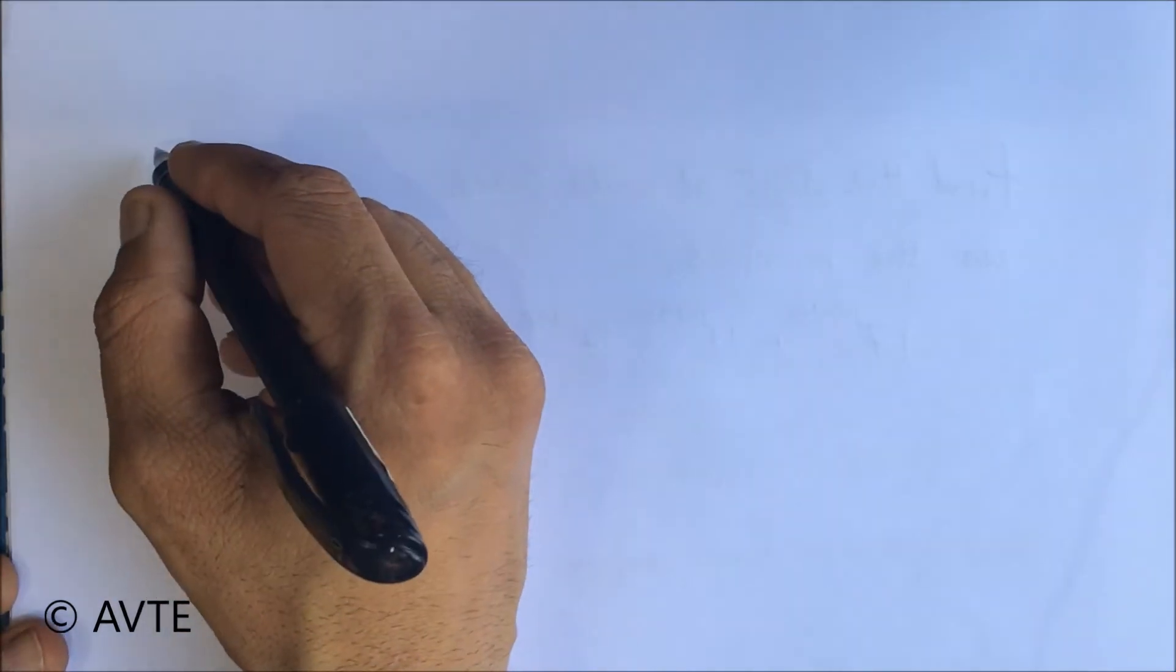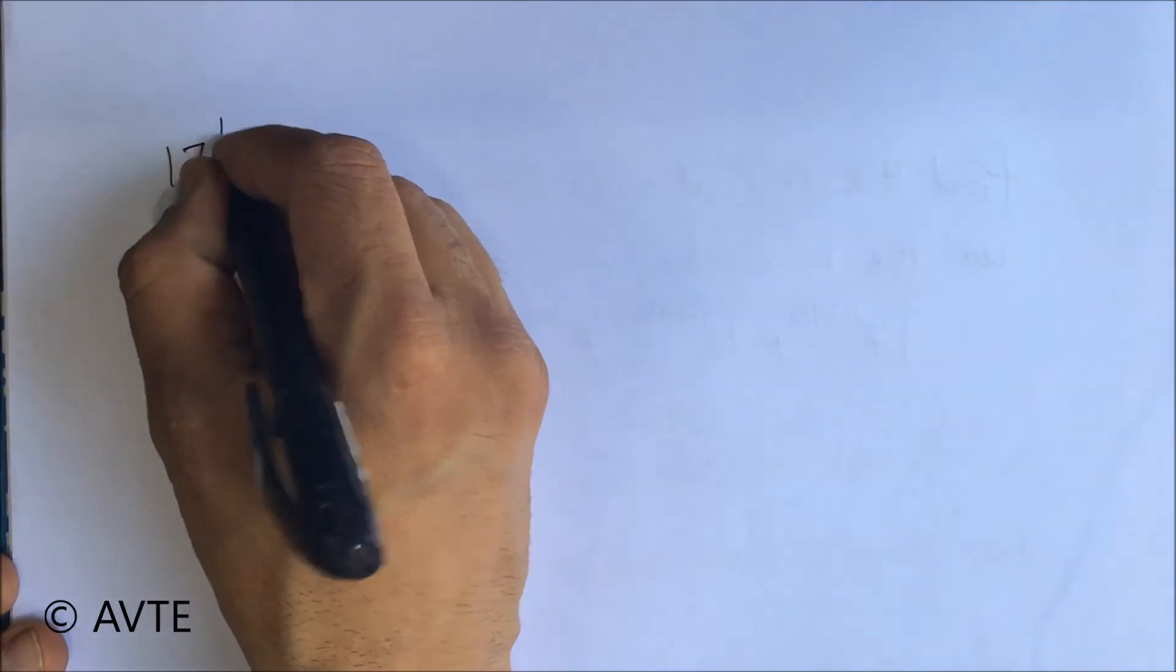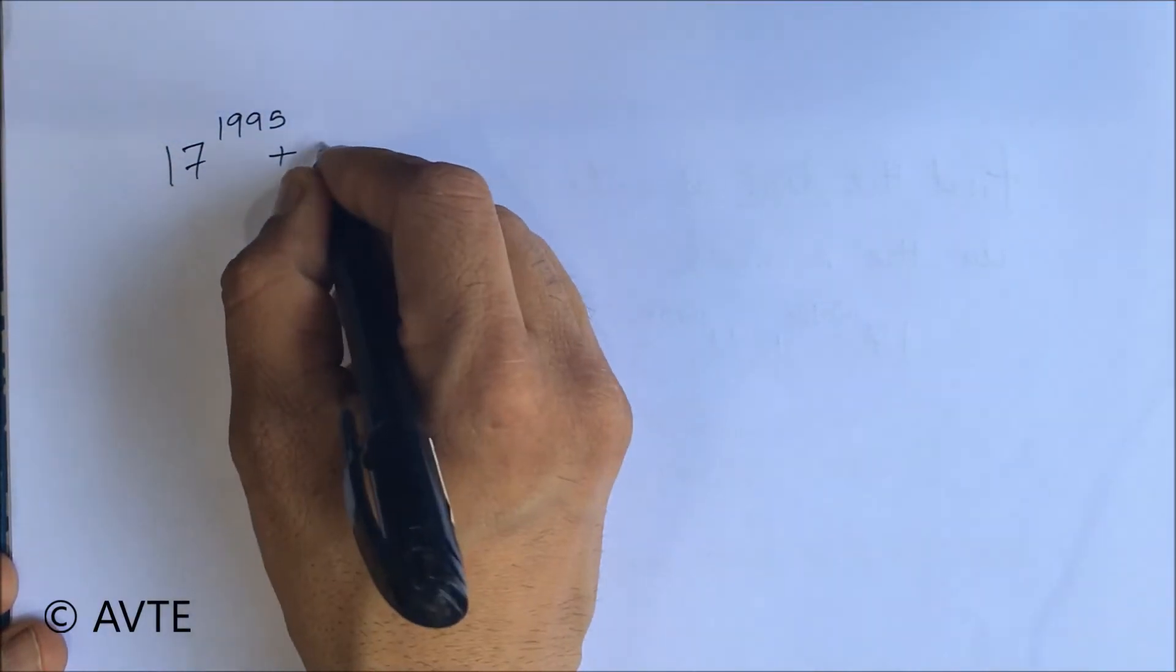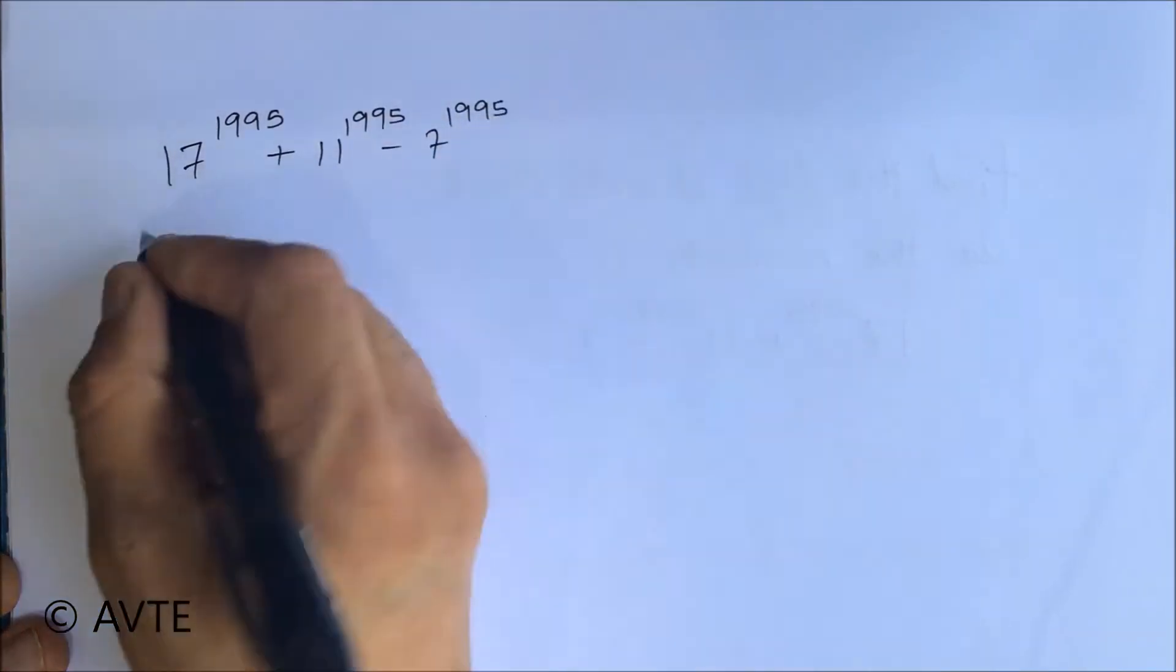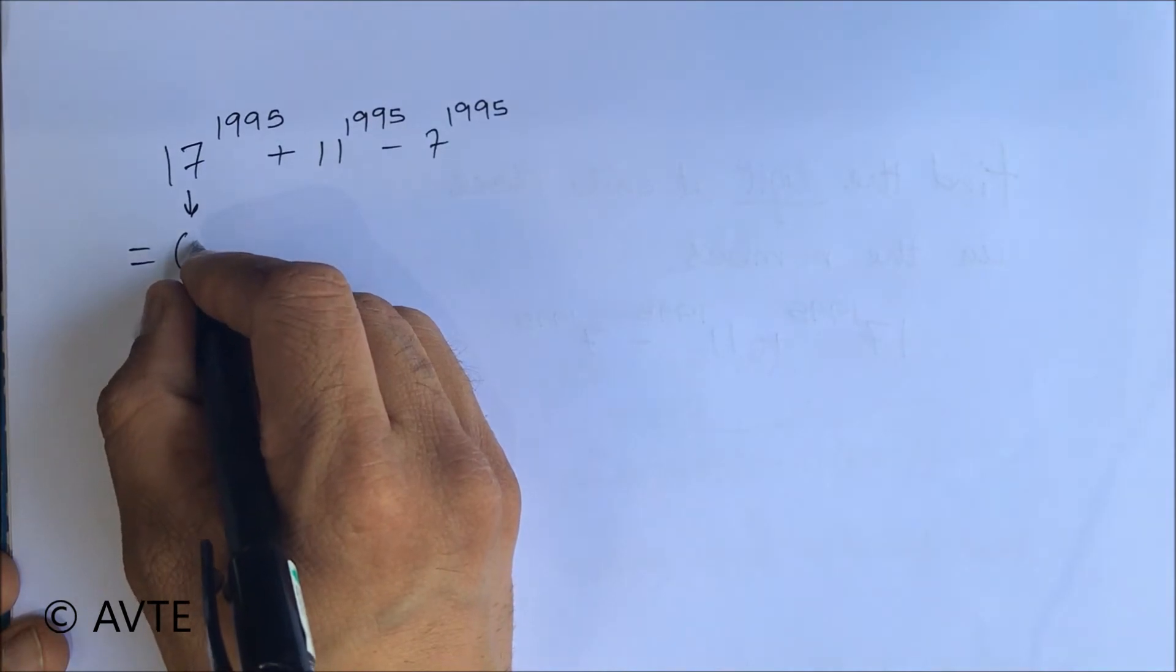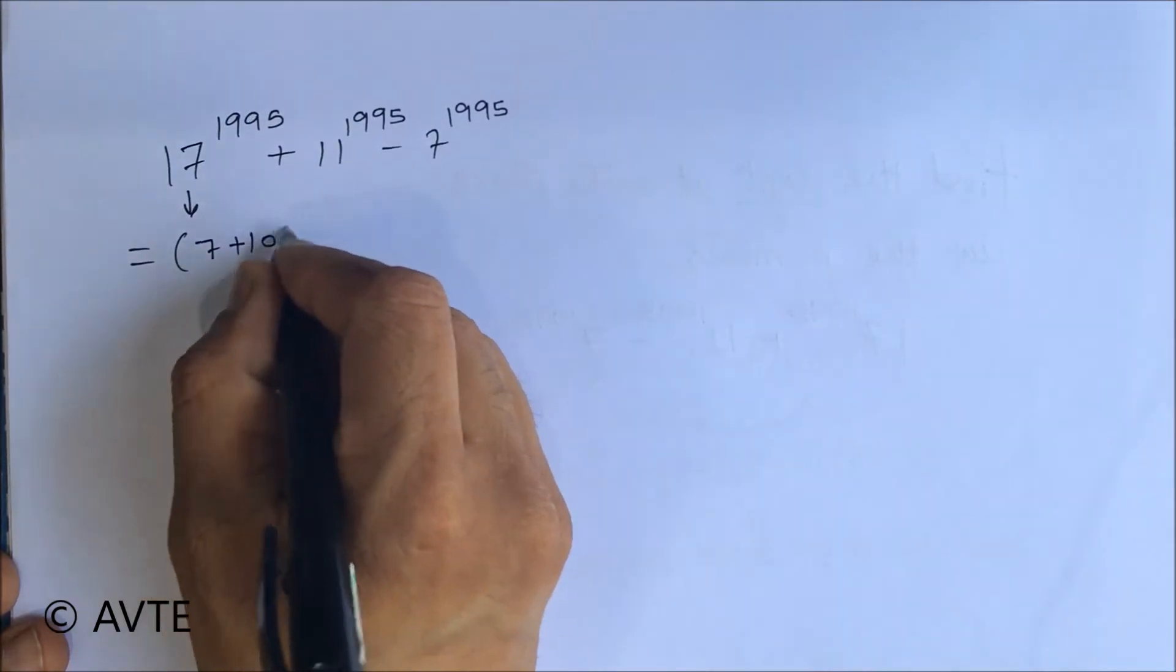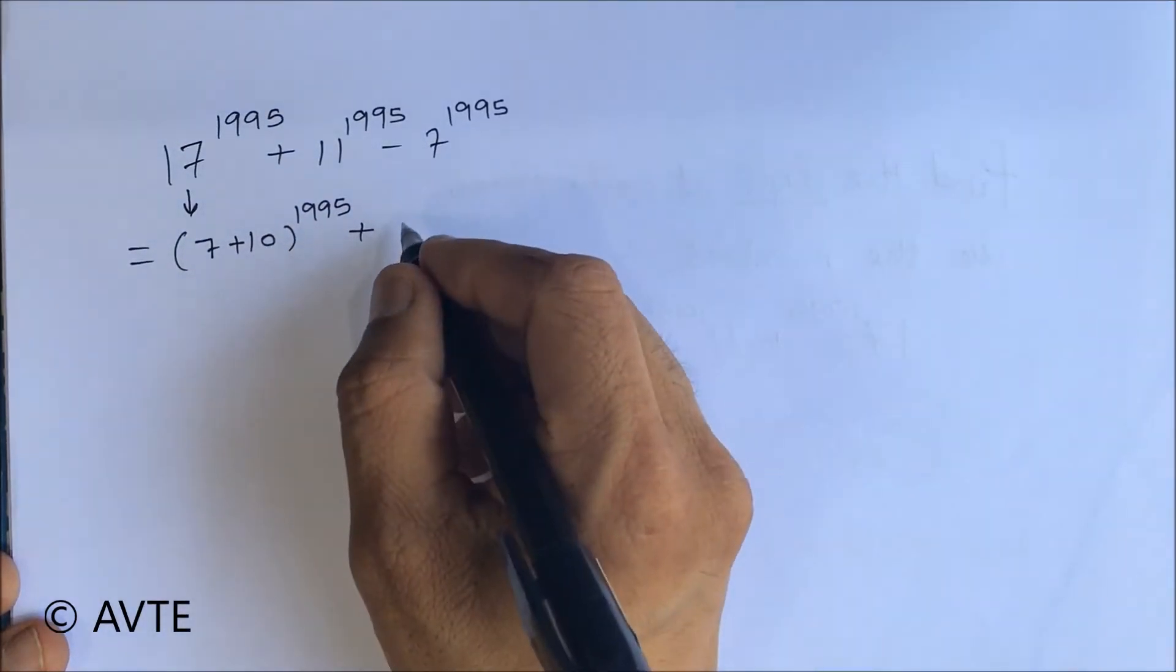Just see how we can write the number. 17 can be taken as 10 plus 7, and 11 can be taken as 10 plus 1.